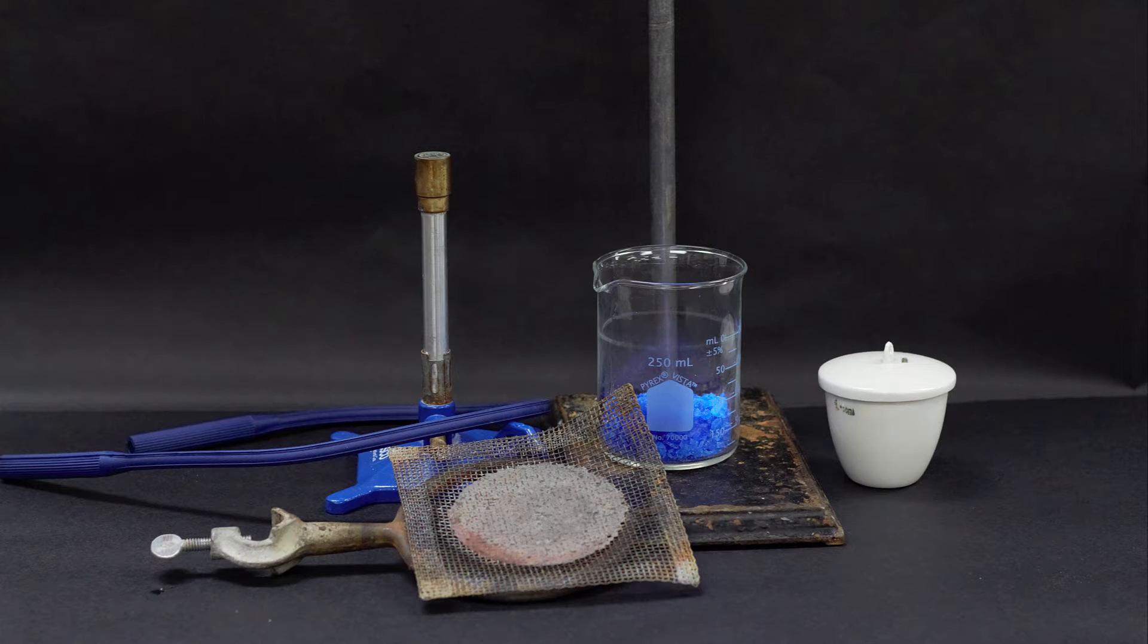For this lab you'll need the following materials: a Bunsen burner, a ring stand and a ring with a ceramic plate, a crucible with a lid, a pair of tongs, and some copper sulfate or an equivalent chemical provided by your instructor.